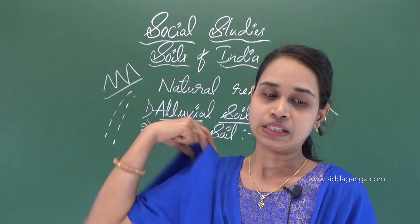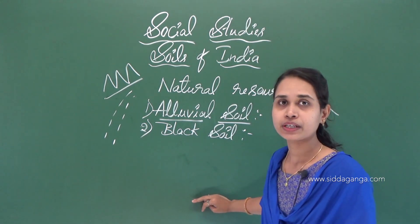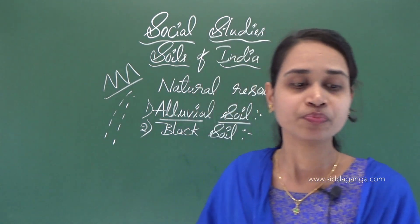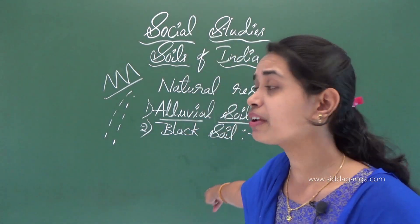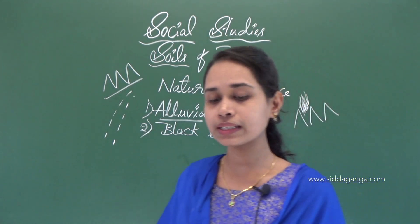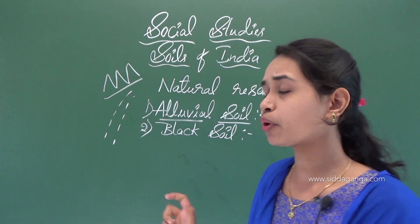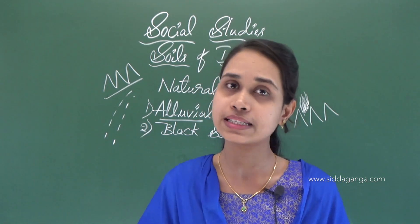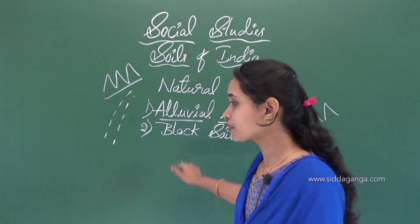Black soil is mostly found in the Deccan Plateau region, in the southern part of India. It covers a large area of Maharashtra, Gujarat, and Madhya Pradesh. Black soil can hold a large amount of moisture. It is suitable for growing crops like cotton, sugarcane, wheat, millets, tobacco, and oilseeds.